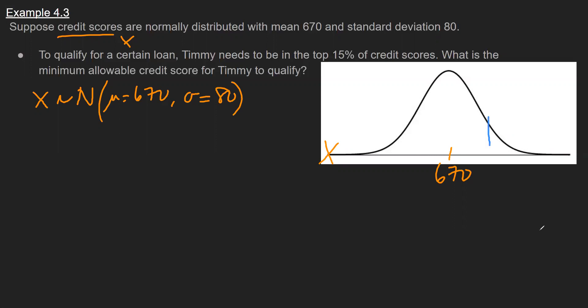So somewhere up here is going to be the minimum score. Let me just call that A. So what I do know is I know that the area to the left of A is 85%. Another way of saying that is the top 15%, the area to the right of it is 15%. So this area over here is 0.85. And if you want, you can look at it in terms of the complement of this area over here in yellow is 0.15. So either way works.